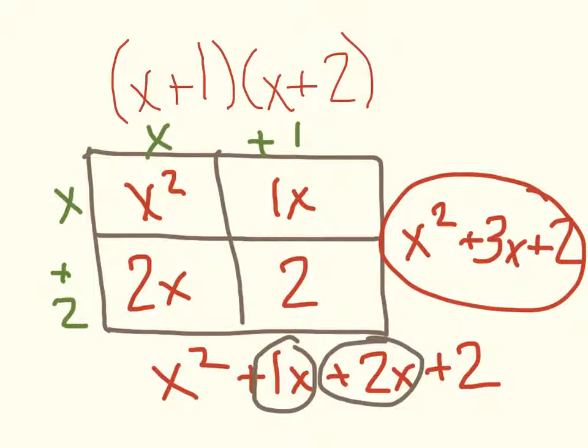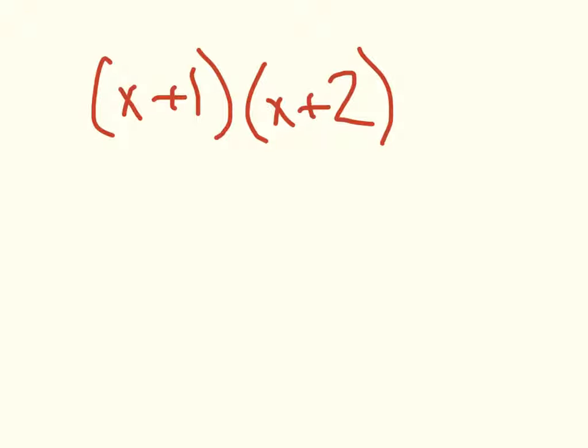I can do the same exact problem in a different way. I can take x plus 1, x plus 2, and multiply them like this. I take this term, multiply it by this. This is called a double distributive. And take this x and also multiply it by 2.